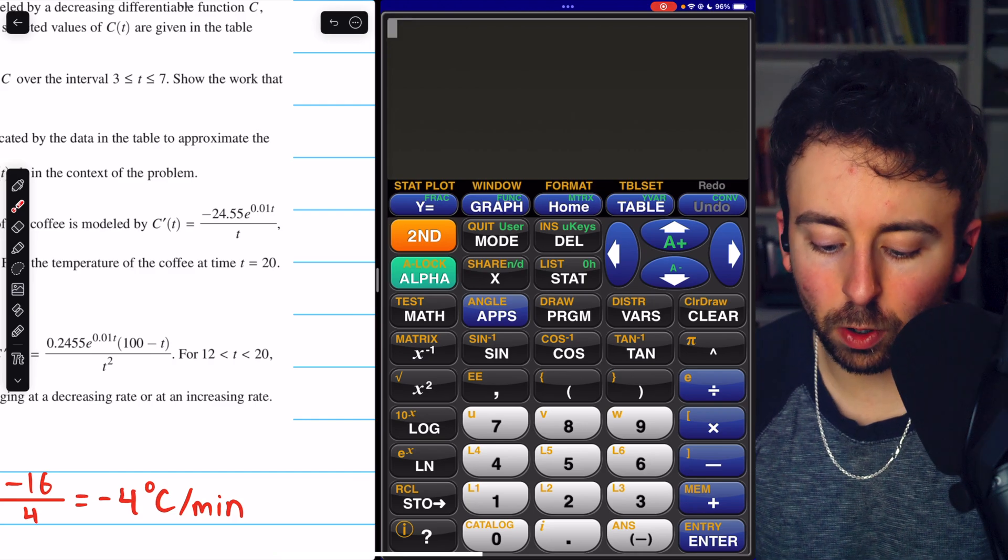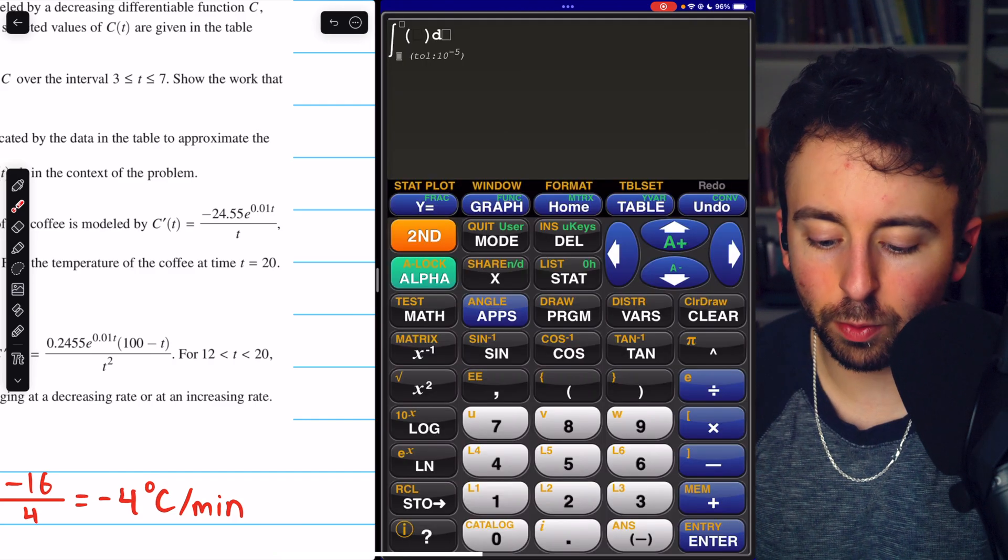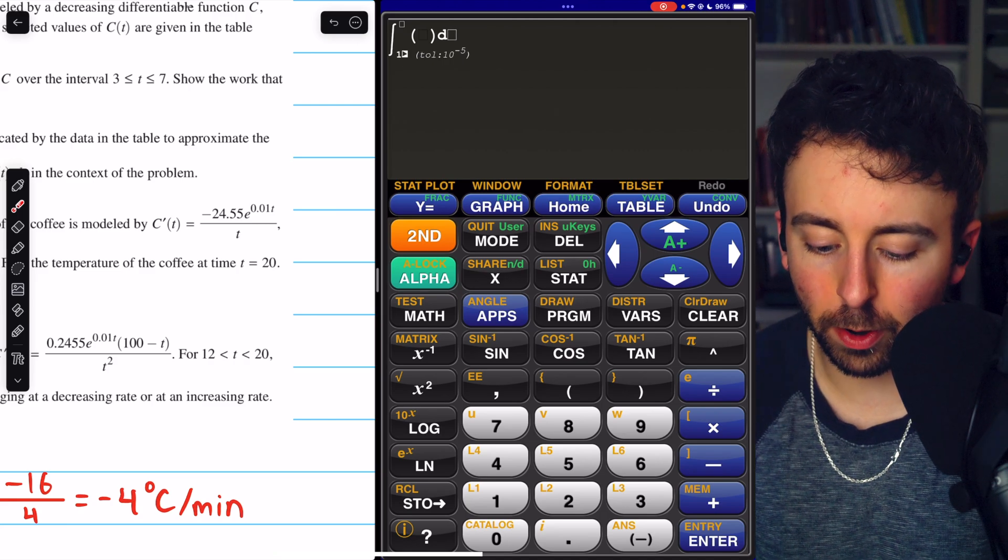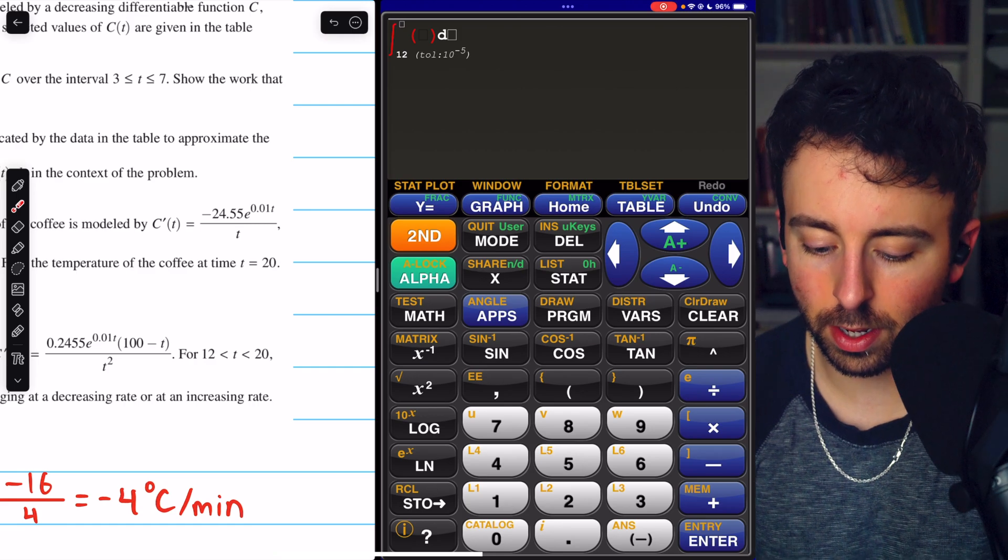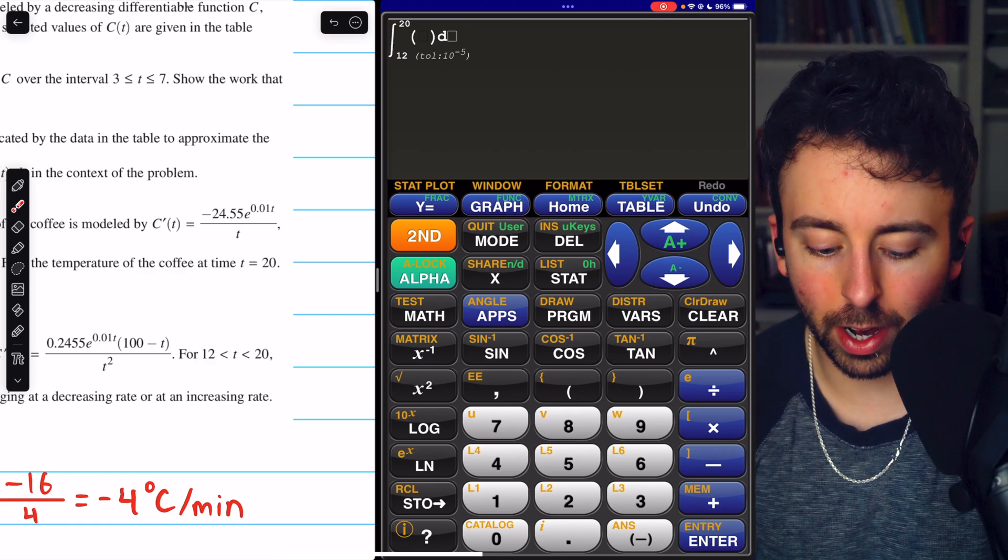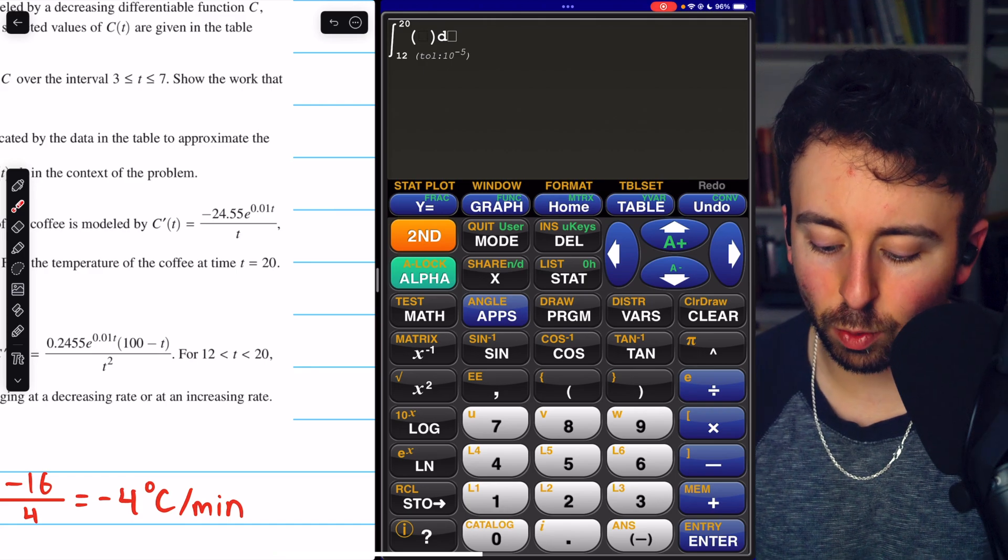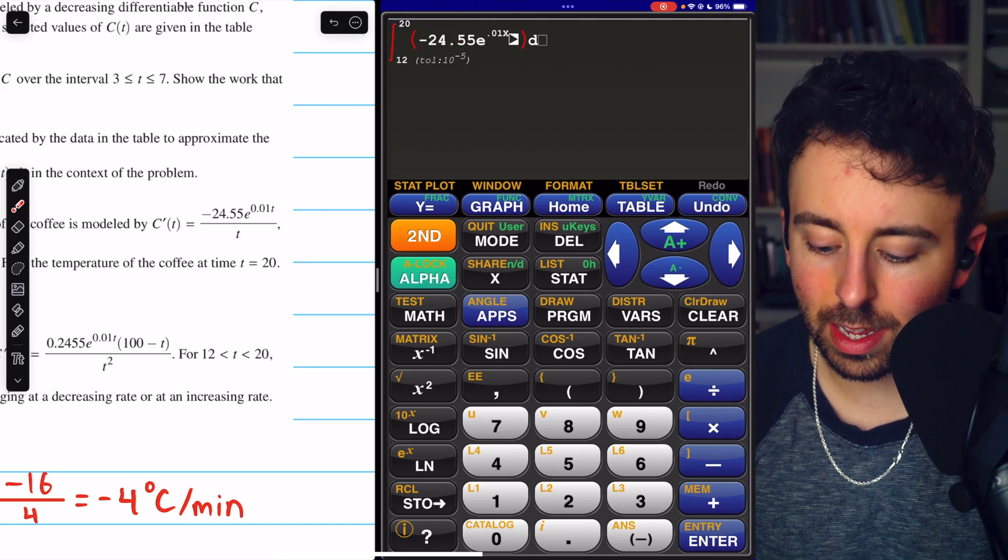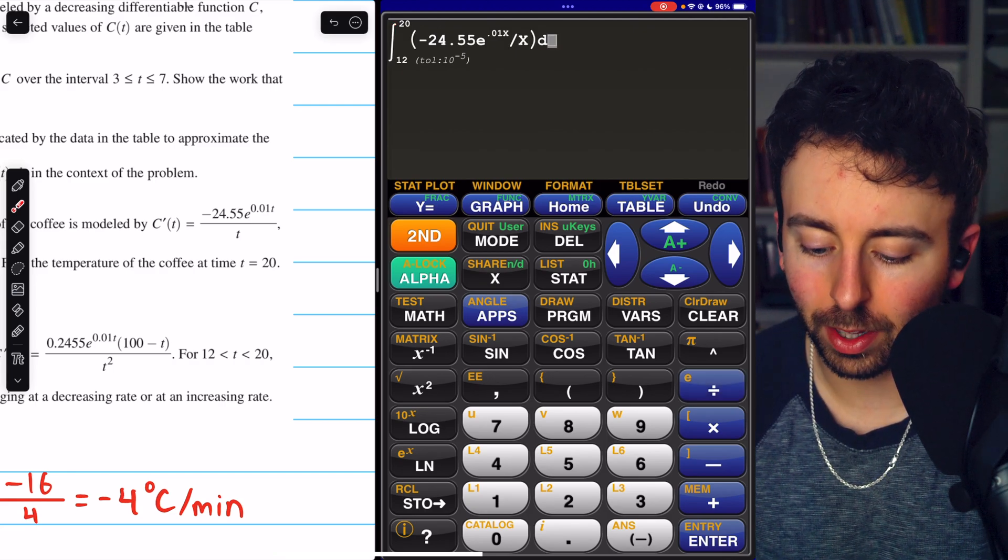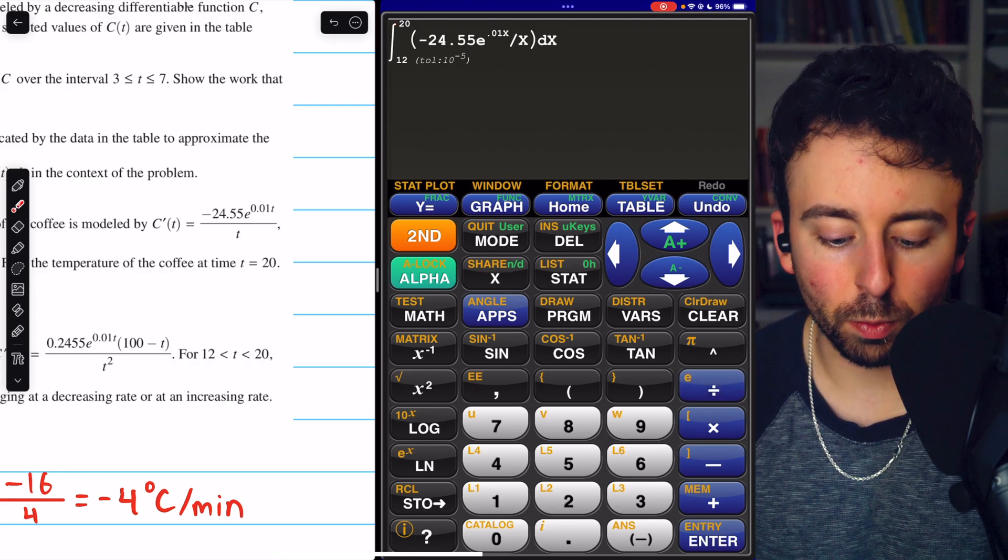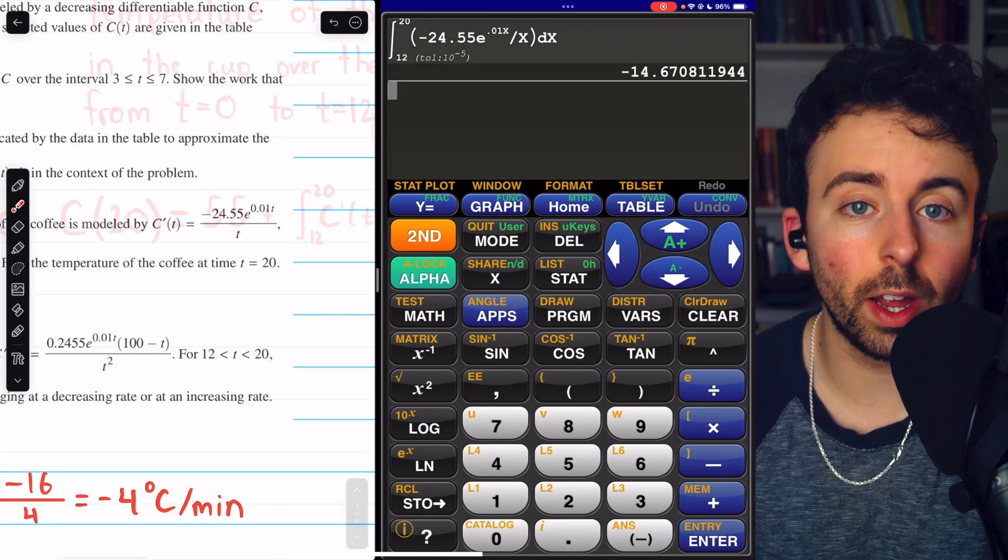So pulling up the graphing calculator, I'll press the math button, and then I will press option nine for the integration function. We are integrating from t equals 12 to t equals 20. And the thing we're integrating is this derivative. So we'll just be careful and type that derivative in. And rather than using the variable t, we will use the variable x, since that's most convenient on the calculator. So we're integrating this with respect to x, and we get negative 14.671.